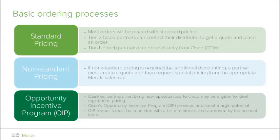As you initiate the ordering process through deal registration, you will first need to familiarize yourself with the different tiers of pricing and the prerequisites or approvals needed to attain a certain pricing level. Standard pricing is the most common level as most orders are placed using this pricing tier. All tier 2 Cisco partners can contact a local or preferred distributor to get a quote and place an order using that price, while tier 1 partners can order direct from Cisco via CCW. Should additional discounting be needed, the deal becomes non-standard pricing. A partner must create a quote and then request special pricing from the appropriate Meraki sales representative, and only after the deal has been reviewed and approved will the non-standard pricing deal be released and processed.